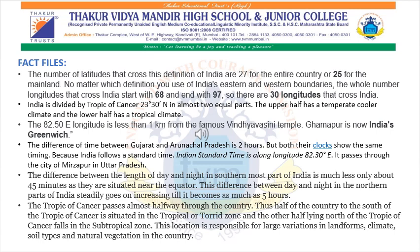Indian Standard Time is along longitude 82.5 degrees east, and it passes through the city of Mirzapur in Uttar Pradesh. The 82.5 degrees east longitude is less than 1 kilometre from the famous Vindya Pashini Temple — Ghammapur is now India's Greenwich. The difference between the length of day and night in the southernmost part of India is only about 45 minutes, as they are situated near the equator, while this difference steadily increases in the northern parts to as much as five hours. The Tropic of Cancer passes almost halfway through the country, placing the southern half in the tropical zone and the northern half in the subtropical zone. This location is responsible for large variations in landforms, climate, soil types, and natural vegetation.